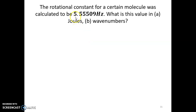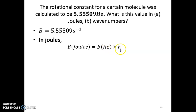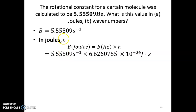In this example, the rotational constant is given as B = 5.5509 GHz and we need to calculate it in joules and wavenumbers. In joules, B = B(Hz) × h = 5.5509 × 10⁹ s⁻¹ × 6.626 × 10⁻³⁴ J·s, with the per-second units canceling to give B in joules.